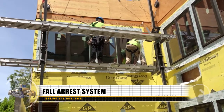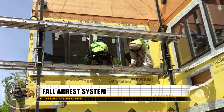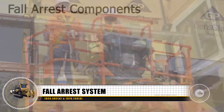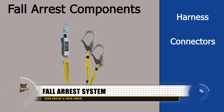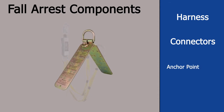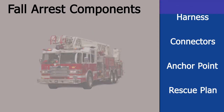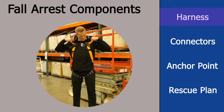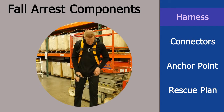The purpose of a personal fall arrest system is to safely stop the fall of a worker. A personal fall arrest system consists of four components: a harness, connectors, anchor points, and a rescue plan. The body harness is designed to distribute the arresting force of a fall across your body. This arresting force must be limited to 1,800 pounds or less.